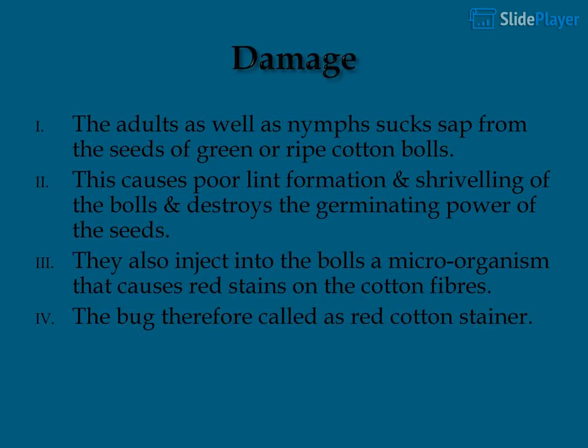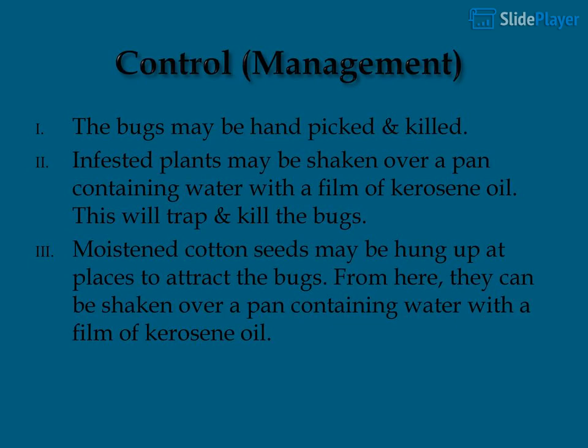Adults and nymphs suck sap from the seeds of green or ripe cotton bolls, causing poor lint formation, shriveling of bolls, and destruction of germinating power of seeds. They also inject a microorganism into the bolls that causes red stains on cotton fibers — hence the bug is also called the red cotton stainer. Control: bugs may be hand-picked and killed, or infested plants shaken over a pan of water with a film of kerosene oil. Moistened cotton seeds hung up at places can attract and trap the bugs.